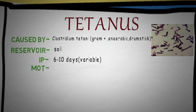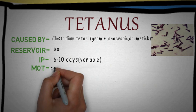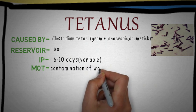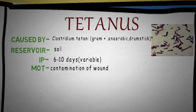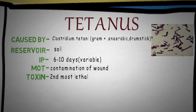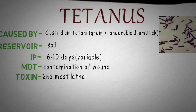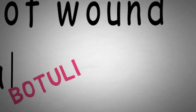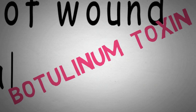Next, what is the mode of transmission of Tetanus? Tetanus is spread by contamination of a wound. Remember that the Tetanus toxin is the second most lethal toxin in the world. The most lethal toxin in the world is botulinum toxin.